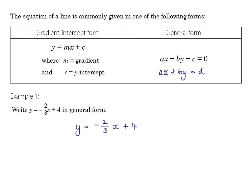To get rid of the fraction, we multiply every term in the equation by 3, giving 3y equals negative 2x plus 12. To get general form, we move everything to one side, keeping as many terms positive as possible: add 2x to both sides and subtract 12 from both sides. The equation in general form no longer involves fractions, but it also no longer directly tells us the gradient or y-intercept — we'd need to rearrange back to gradient-intercept form to see those.